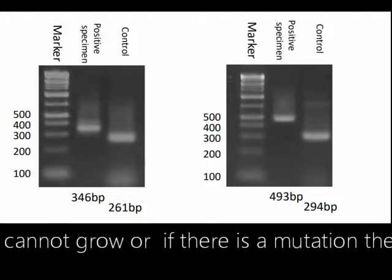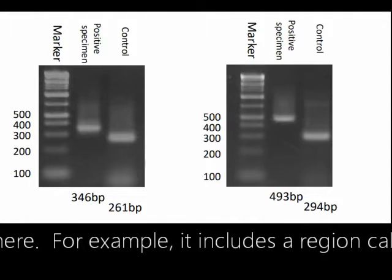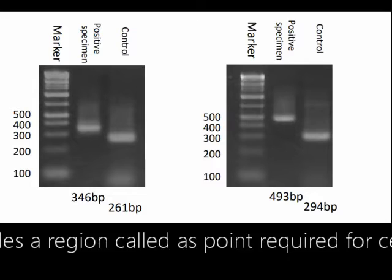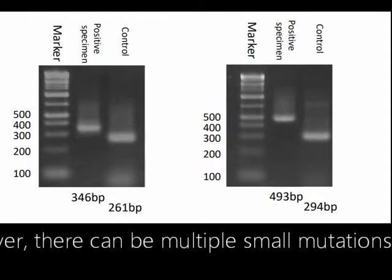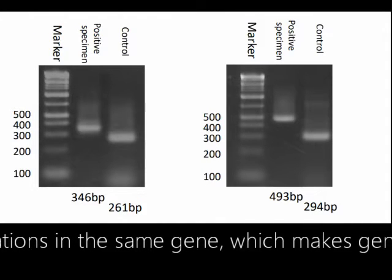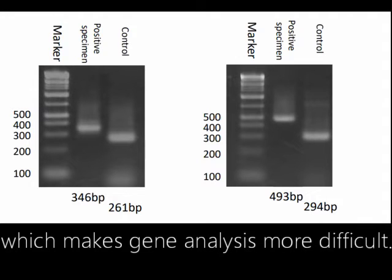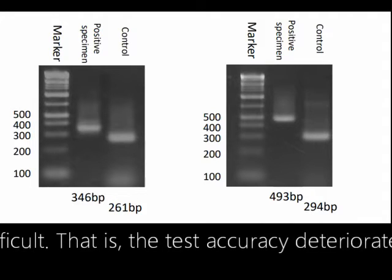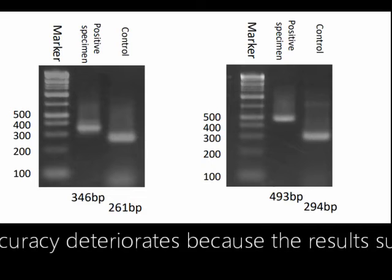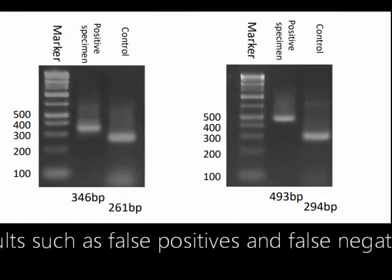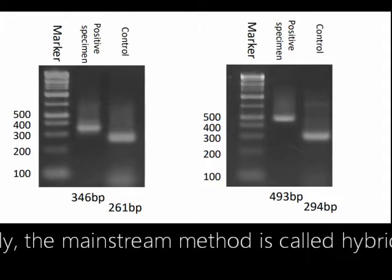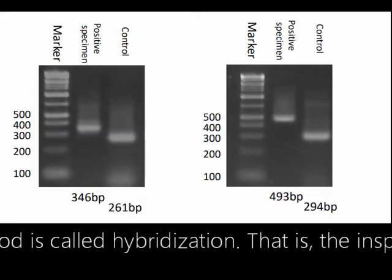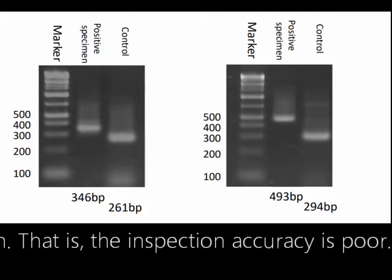If there is a mutation in that region — for example, it includes a region called a point required for cell junctions — there can be multiple small mutations in the same gene, which makes gene analysis more difficult. The test accuracy deteriorates because results such as false positives and false negatives occur. Currently, the mainstream method is hybridization, but the inspection accuracy is poor.